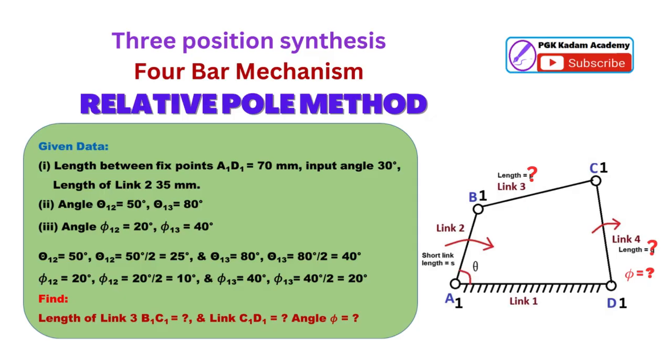Angle theta 1-2 equal to 50 degrees. Angle theta 1-3 equal to 80 degrees. Angle phi 1-2 equal to 20 degrees. Angle phi 1-3 equal to 40 degrees.